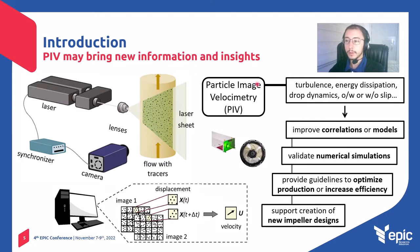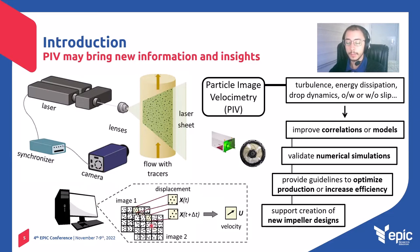Particle Image Velocimetry is a flow visualization method which uses a laser generator to illuminate the flow and a camera to capture images of this flow. The flow is full of tracer particles, which are very small solid particles. These particles receive the light from the laser and reflect it to the camera sensor. When the computer compares the images, these particles are detected and their displacement and velocity can be calculated.